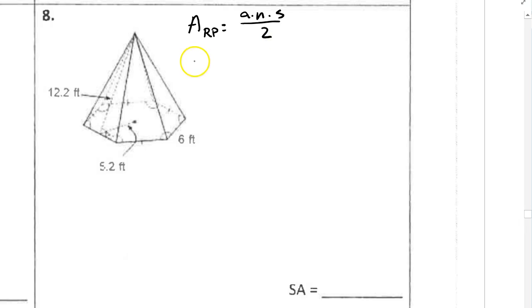And then all the other sides are going to be congruent triangles. So I need the area of a triangle. That's base times height divided by 2. And we should have all the different dimensions we need in the figure so we won't have to calculate anything.